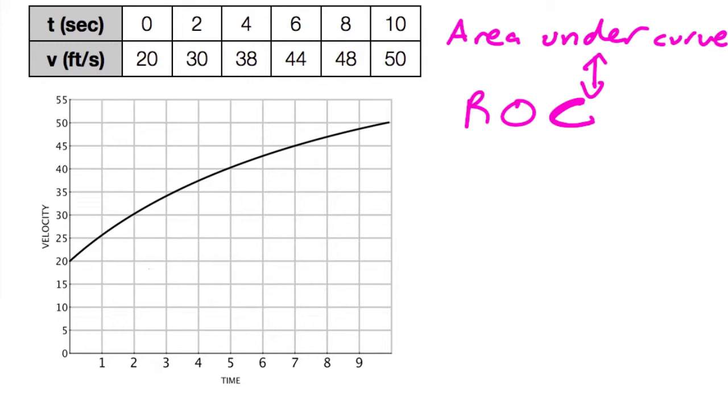So let's say, for example, you have a car that's driving at this velocity. So at 0 seconds, the car is going 20 feet per second. At 4 seconds, for example, it's going 38 feet per second. And then it goes up to 10 seconds, and then it's going at 50 feet per second. Okay, now take a look at this.